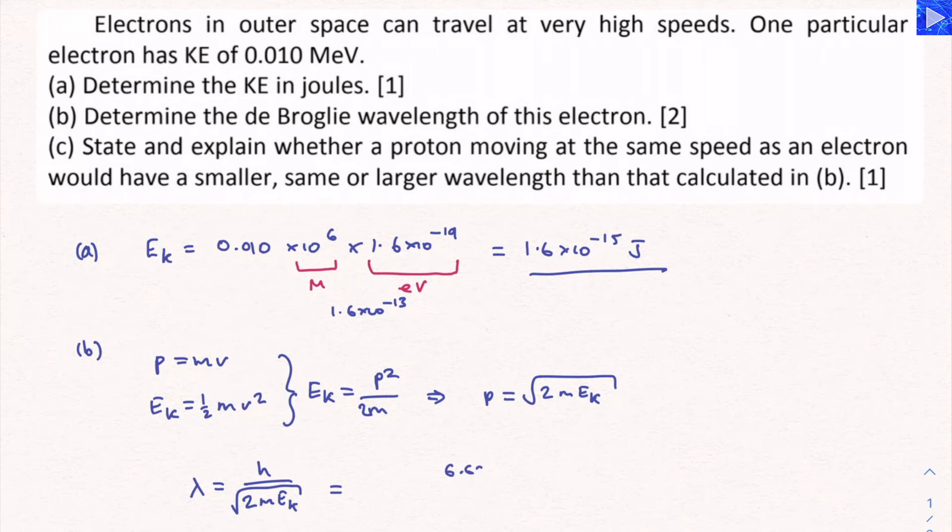Okay, now let's substitute our values in. So we've got 6.63 times 10 to the minus 34, and then square root of 2 times the mass we're dealing with electrons. That's on the formula sheet, so 9.11 times 10 to the minus 31. The kinetic energy is what we just calculated, 1.6 times 10 to the minus 15. And don't forget to square root the lot.